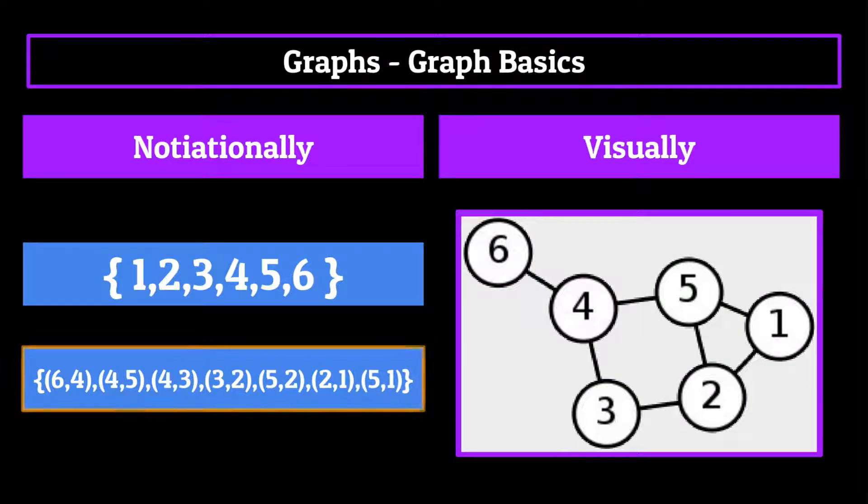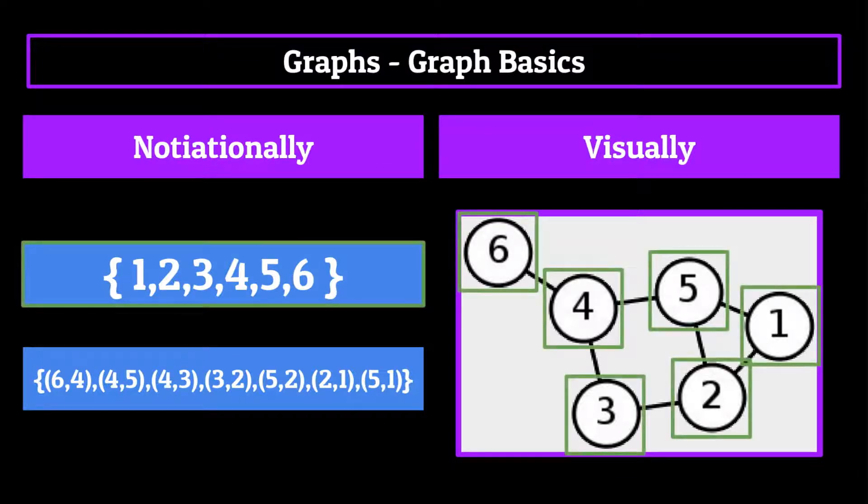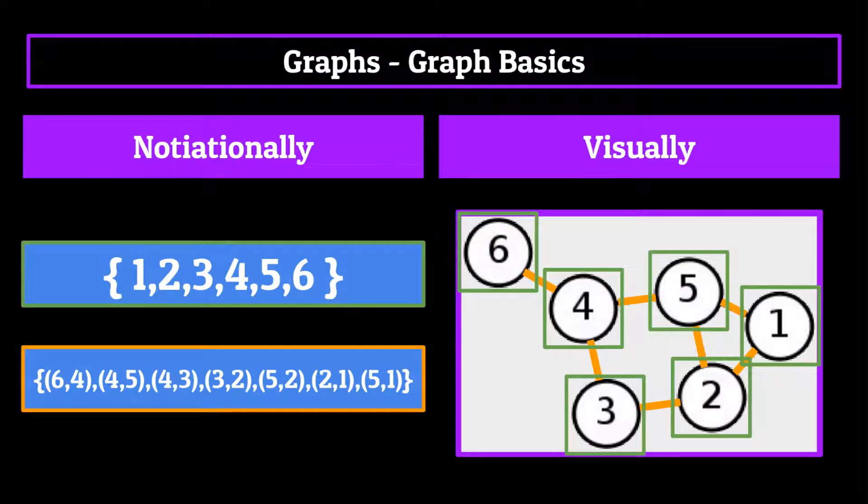Then we have the edge set, which is a little bit more complicated. Each element of the edge set is an ordered pair which describes a relationship between nodes. For example, the first one describes a relationship between the six and four nodes. The fifth indicates a relationship between the five and two nodes, and so on. Using these two sets, we're able to build our graph pretty easily by laying down both the information and the connections that fall between them.